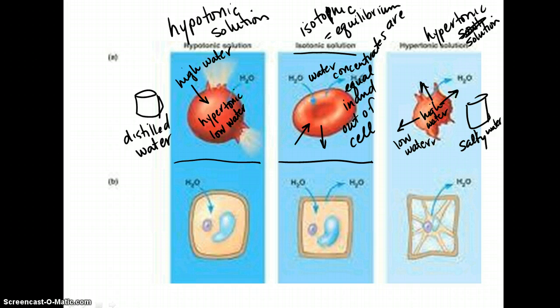You notice all those arrows, and so it shrivels up the cell. This is definitely something that can kill people, as well as hypotonic solutions. But plant cells are a little bit different.